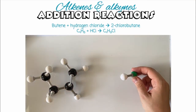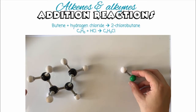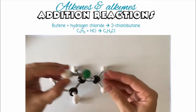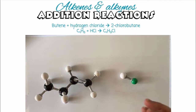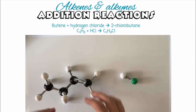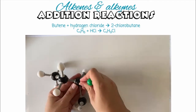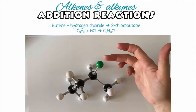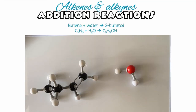Now let's look at the reaction of our alkene, butene, with a hydrogen halide — so this could be hydrogen chloride (HCl). Very similar to the last two examples, this double bond breaks to allow these two atoms to be attached to the one molecule. So instead of having butene and hydrogen chloride, we would have a molecule that contains both hydrogen and chlorine, and in this case we have 2-chlorobutane.